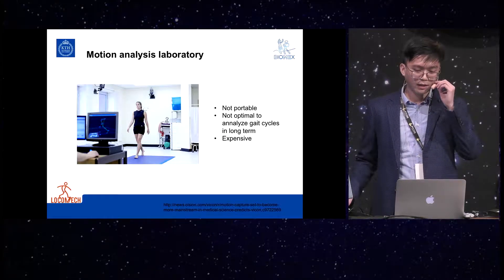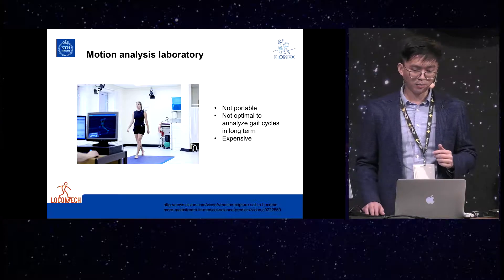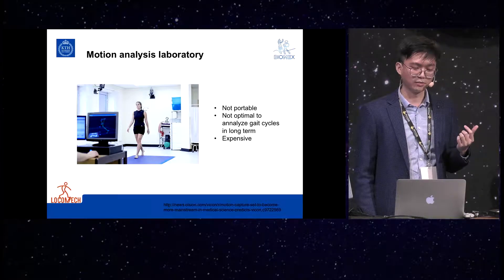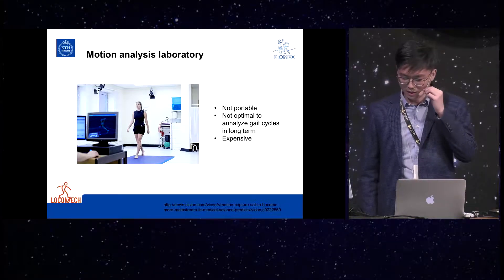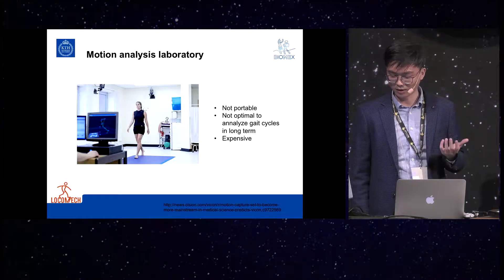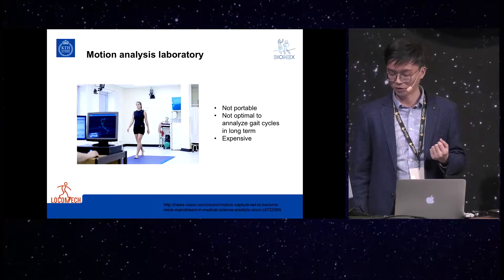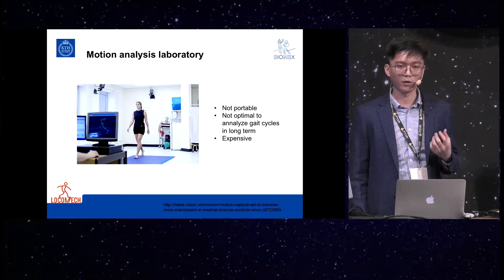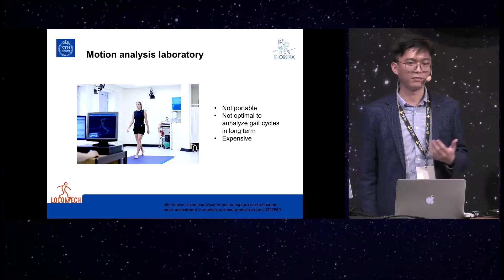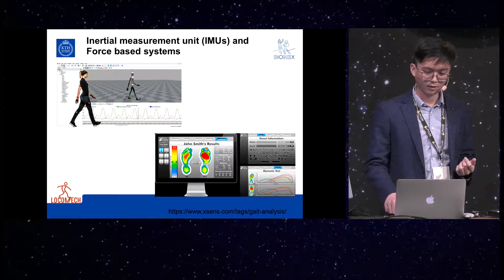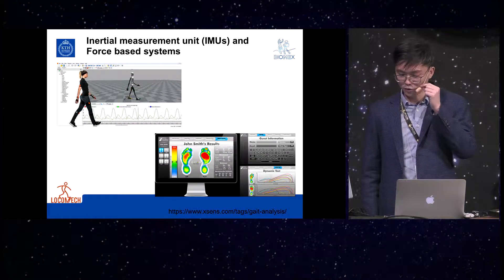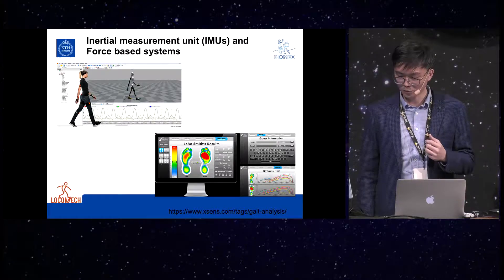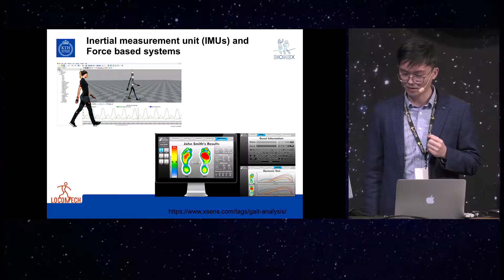Most commonly, gait analysis is conducted in motion analysis laboratories with force platforms and optical motion systems. However, those motion capture systems are non-portable, operate only in a controlled environment, and are consequently not optimal to analyze consecutive gait cycles for long-term mobility scenarios. Of course, they are also very expensive. Recently, gait recognition using inertial measurement units has become an active research field, due to their small size, portability, and high processing power.